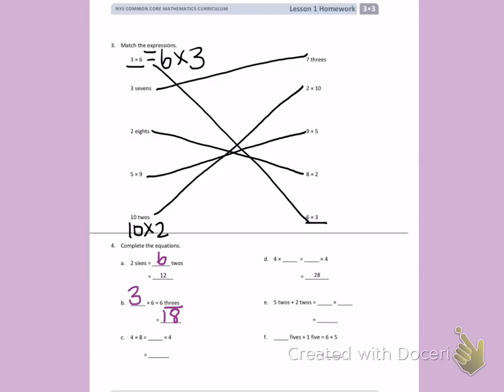Letter C, 4 times 8 equals blank times 4. Be careful on this one. We don't want to put the total in the blank. We want to find the missing factor when we use the commutative property. 4 times 8 equals 8 times 4.